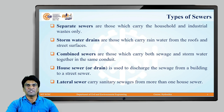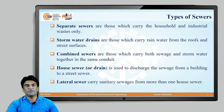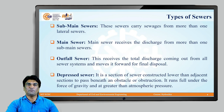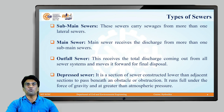House sewers or house drains are used to discharge sewage from a building to a street sewer. Lateral sewers carry sanitary sewage from more than one house sewer. Sub-main sewers carry sewage from more than one lateral sewer. And the main sewer receives discharge from more than one sub-main sewer.